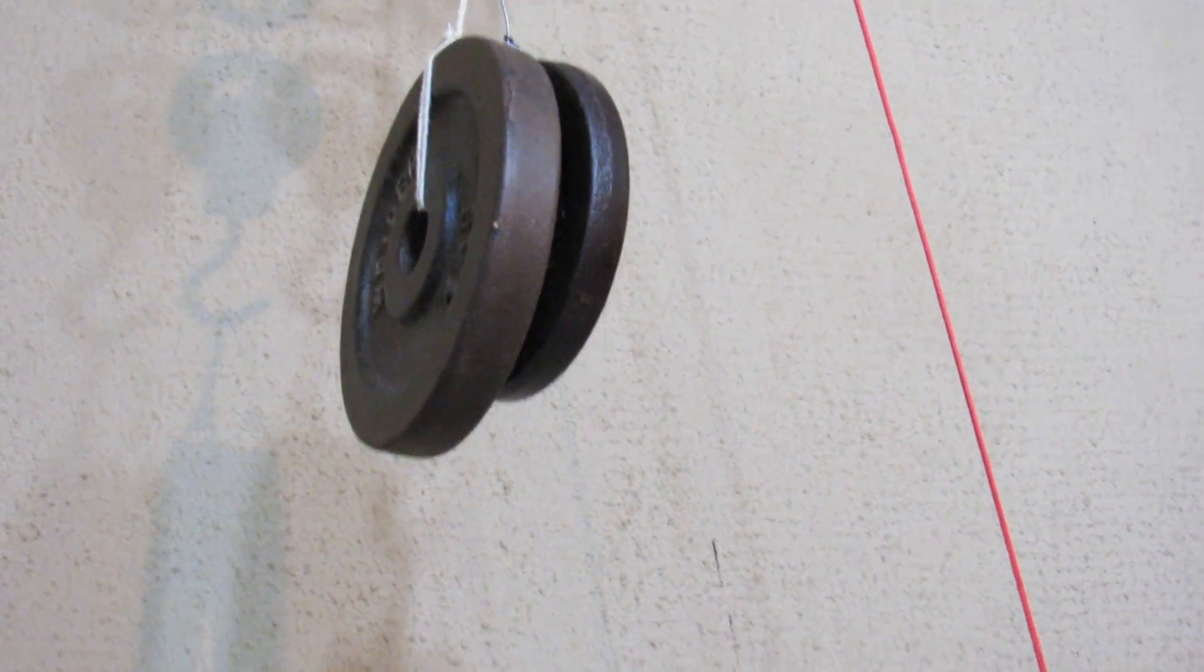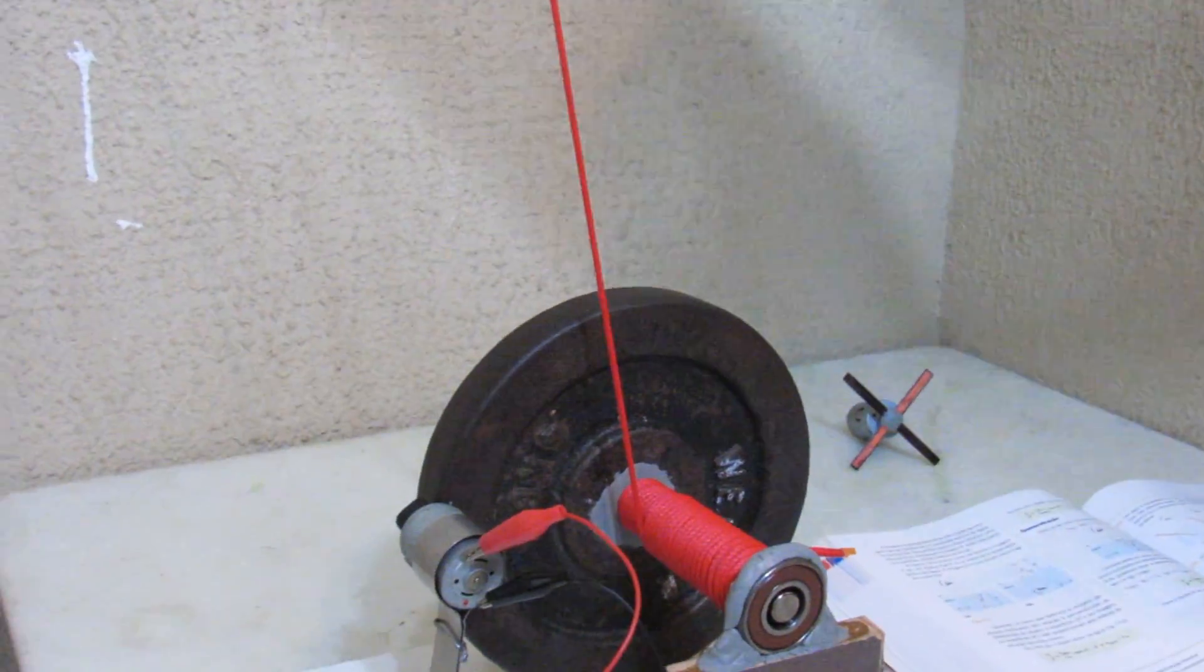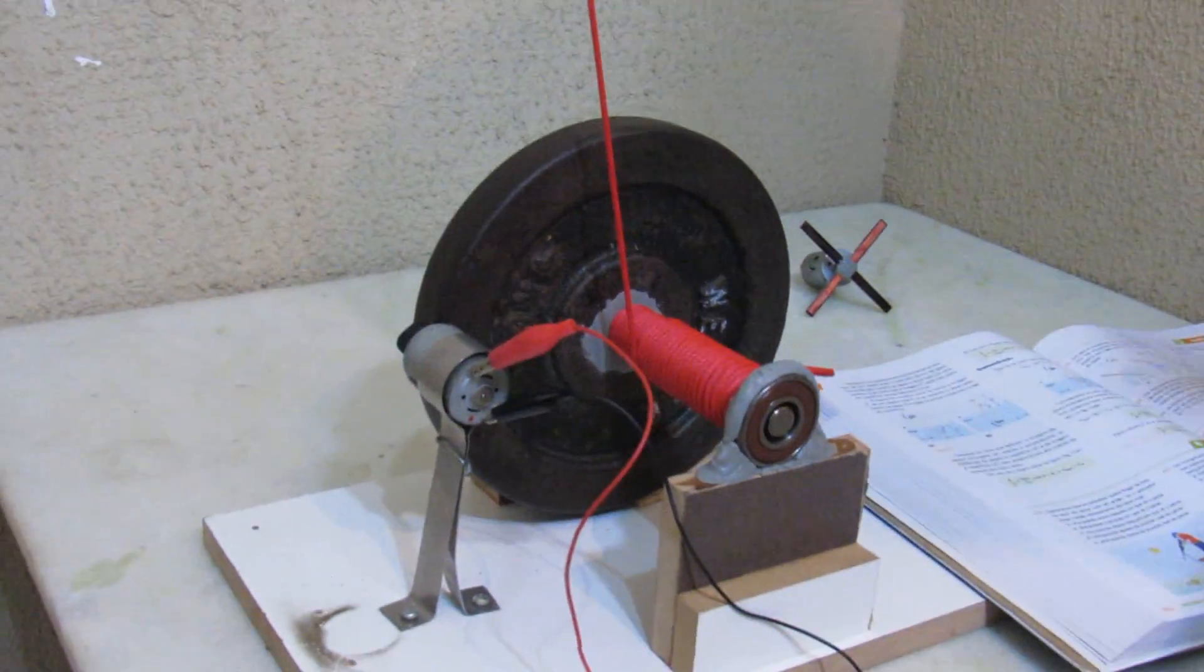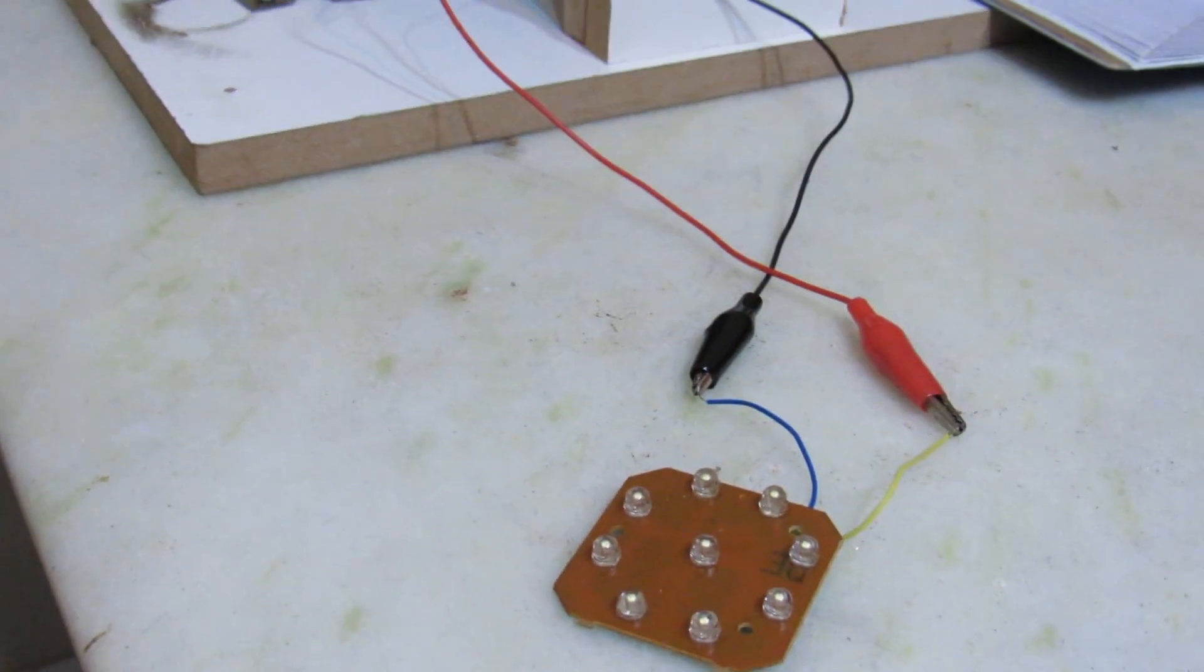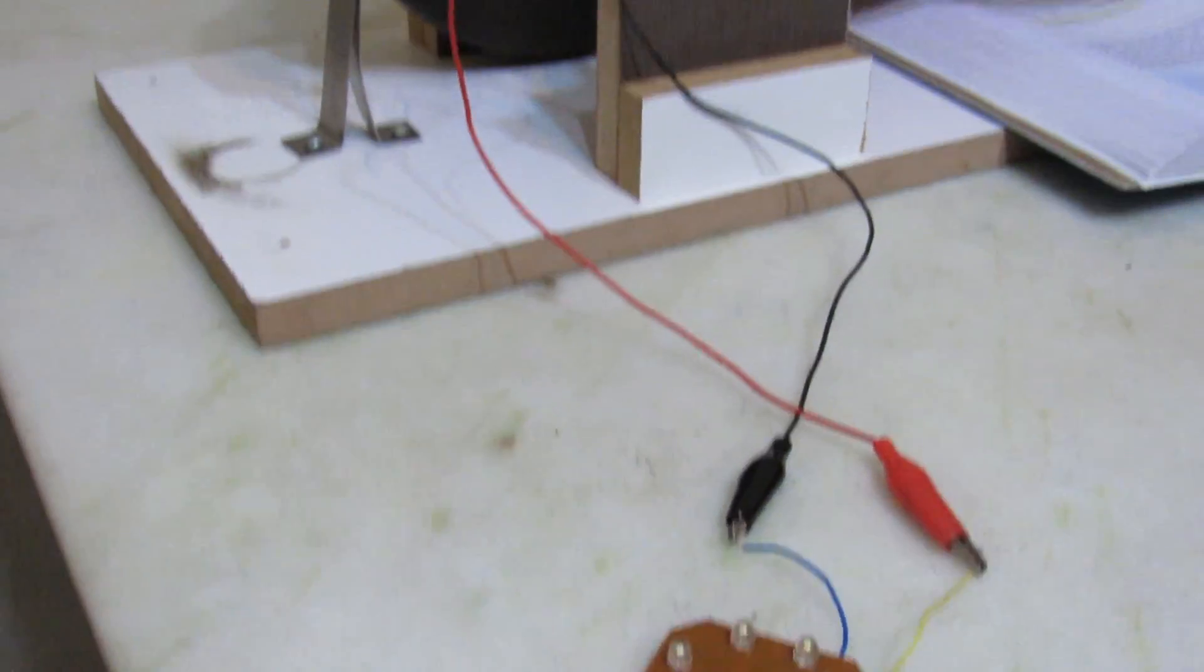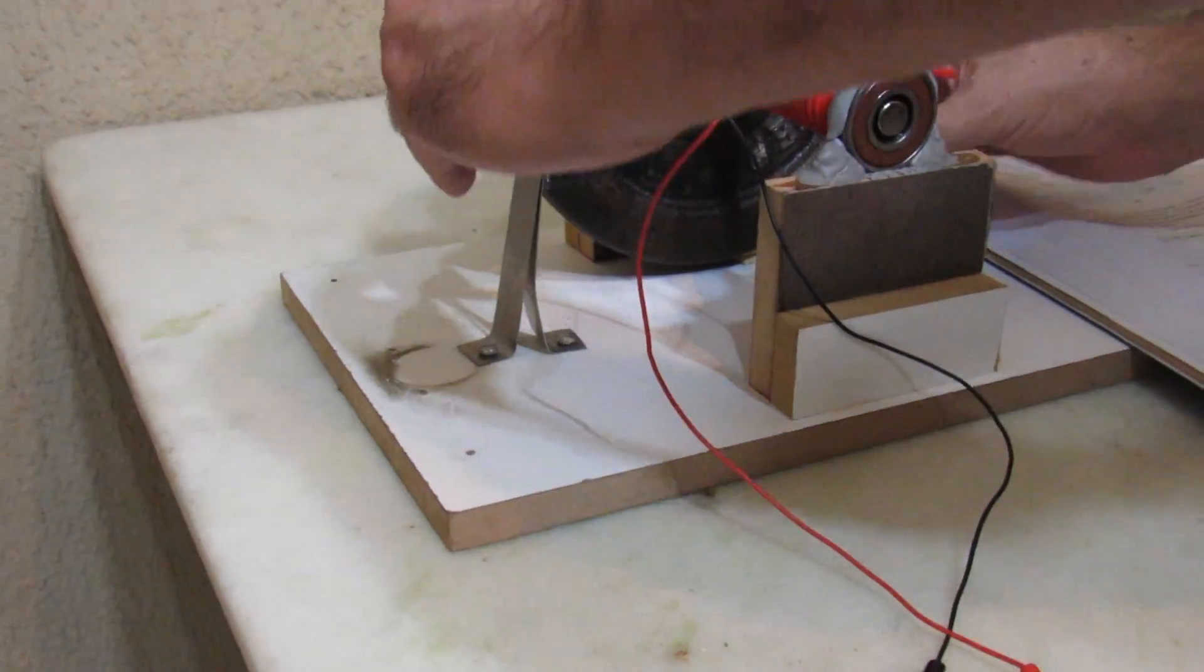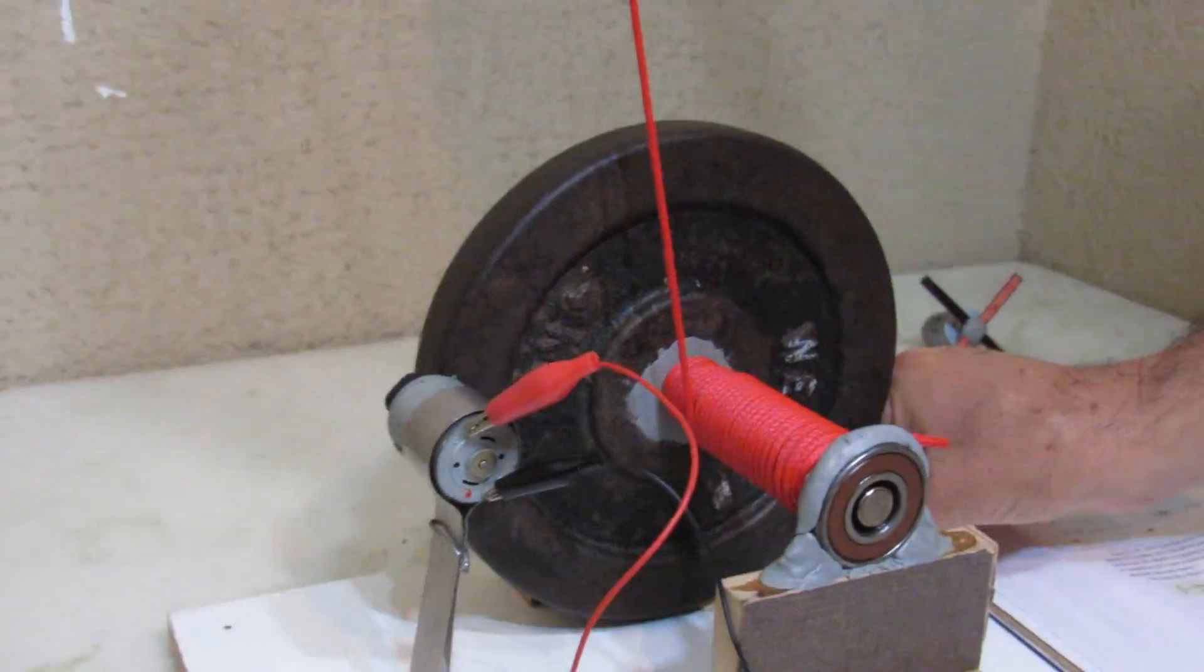O sistema deles é mais compacto e usa engrenagens. Eu estou usando roldanas. Então eu vou tentar fazer esse peso acionar esse grupo de LEDs para que eu possa visualizar o meu livro aqui. Então vamos ver como é que funciona. Deixa eu ajustar ele aqui, então vou diminuir a iluminação.